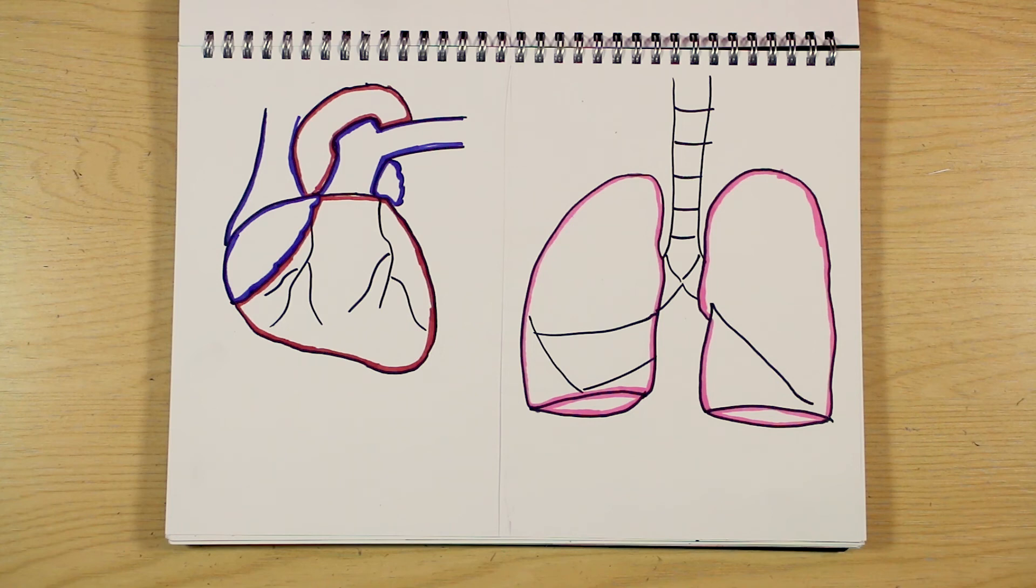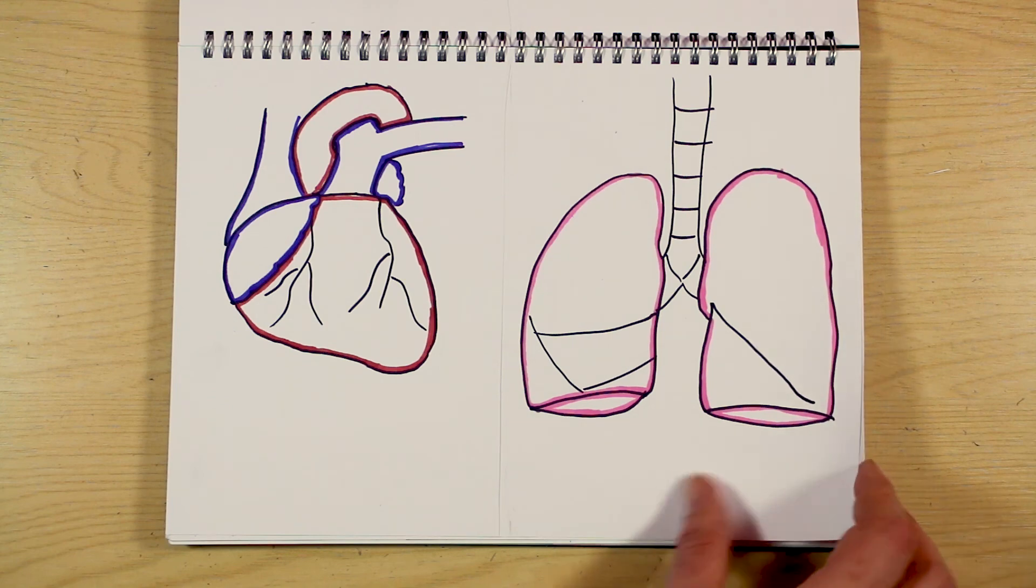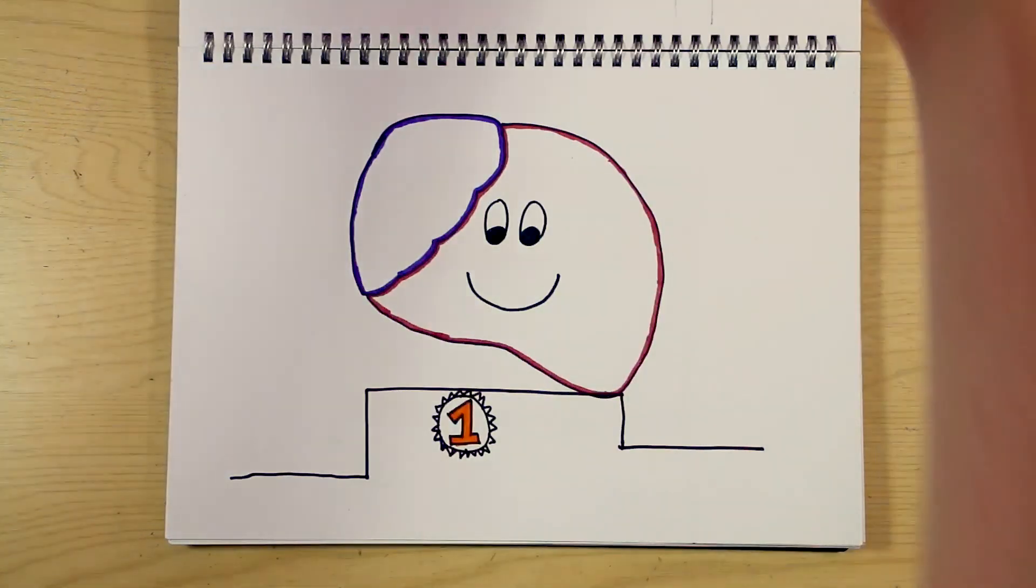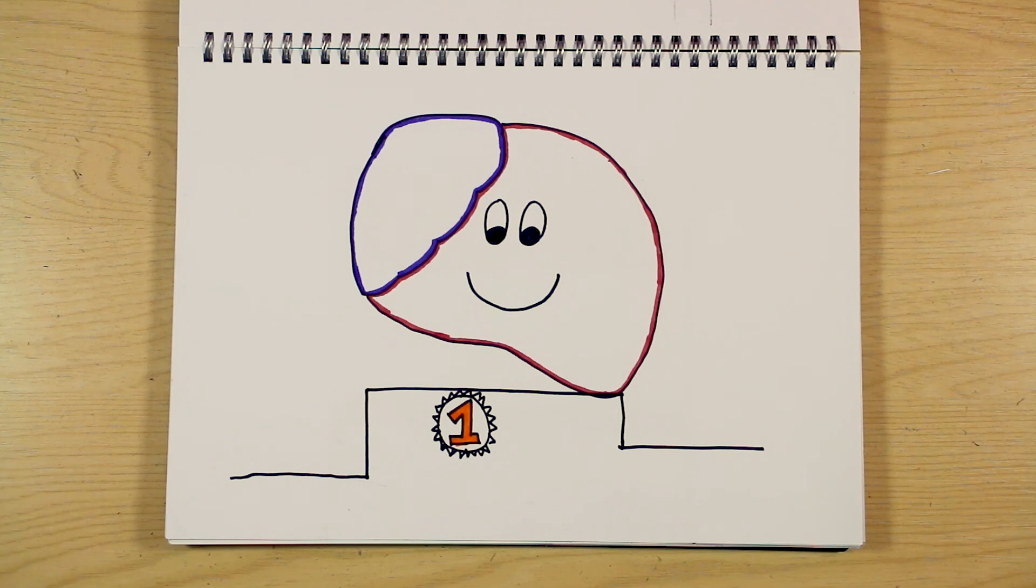For thousands of years, humans believed that the heart was the seat of our soul. While we now know that our consciousness and thought processes arise in the brain, surely there is no harder working organ than the heart.